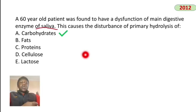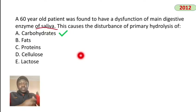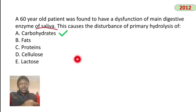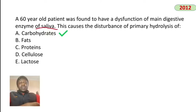A patient has dysfunction of the main digestive enzyme in saliva. The main salivary enzyme is salivary amylase (ptyalin), which digests starch — amylose and amylopectin, which are carbohydrate polymers of glucose. The answer is carbohydrates.